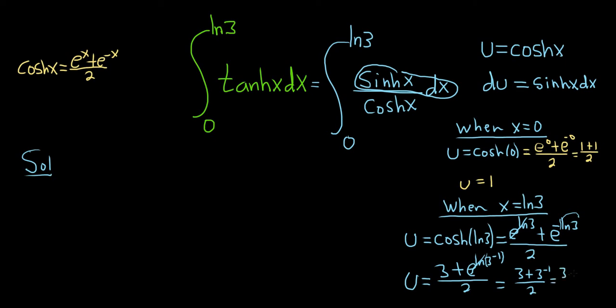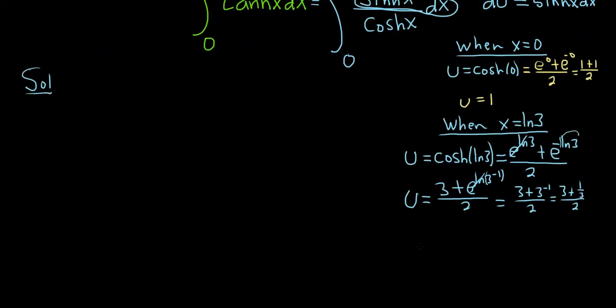So it's the same thing as 3 plus 1 third over 2. Thinking of 3 as a number over 3, it's really 9 thirds plus 1 third all over 2, which is really 10 thirds all over 2. And when we divide by 2, we really multiply by the reciprocal, so it's 10 thirds times 1 half. And that's the same thing as 5 thirds.